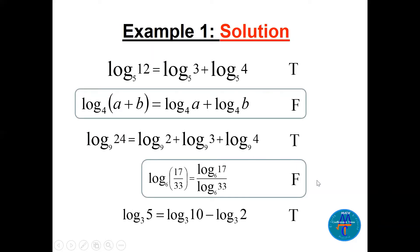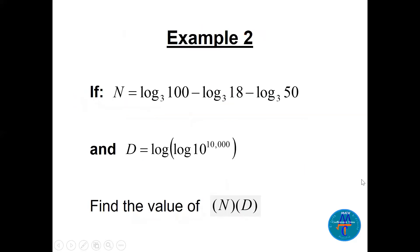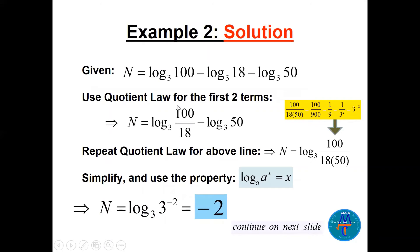Now let's work a nice example. Capital N equals this expression and capital D equals that expression. Let's find N times D. Simplify each one using the laws. For N: log base 3 of 100 minus this, minus this. I can take the first two and from the minus make a quotient: log base 3 of 300 over 18.